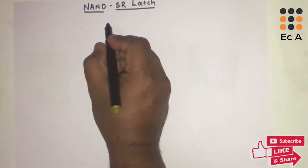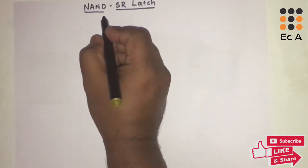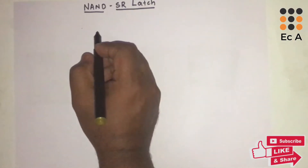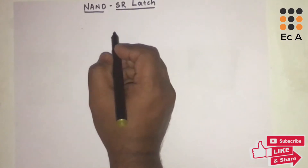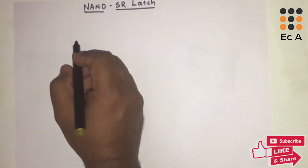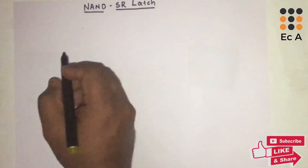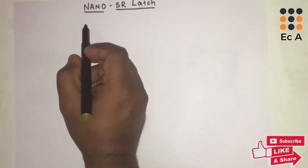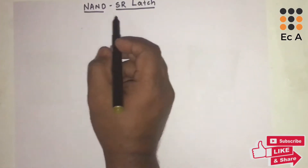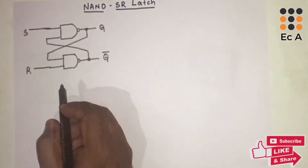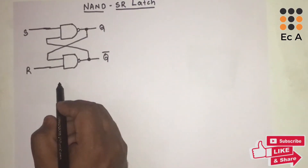Hello friends, welcome to Easy Academy. In this lecture we will understand the NAND SR latch. A latch is the basic storage element and it can hold one bit of data. SR latches can be classified as NOR latches and NAND latches. This is the logic diagram for the NAND SR latch.